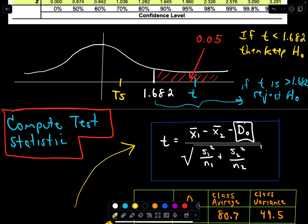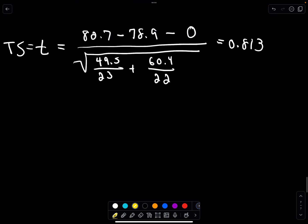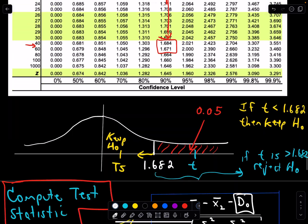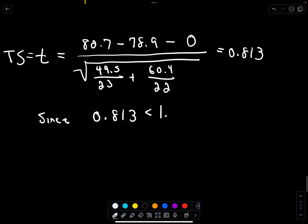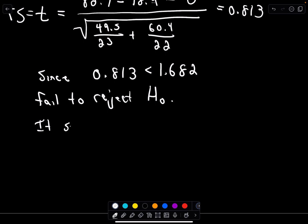Well our test statistic is falling, if it falls to the left of that value 1.682, if it falls to the left this is where we keep our null hypothesis. So that's our conclusion. Since our test statistic 0.813 is less than that value we got from the table which was 1.682, let me say it more correctly, we fail to reject our null hypothesis. So at this point the conclusion is it seems a calculator gives no advantage. So that's all there is to it. Really just some computations, really quite a few computations, but after that that's it.